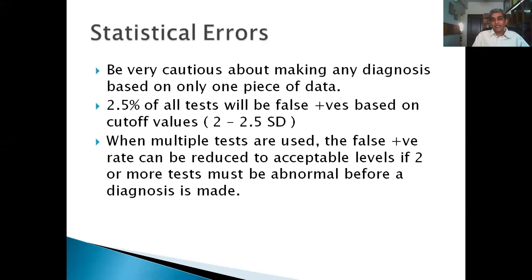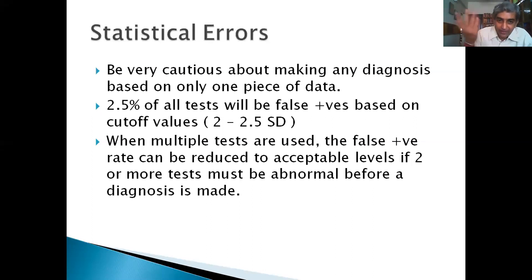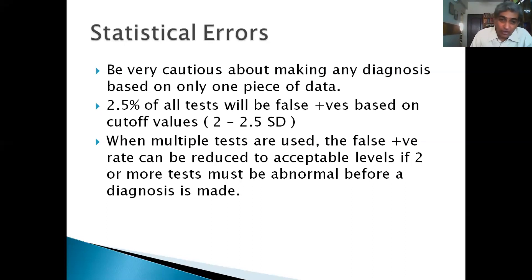Most other lab tests have a lower and upper cut-off, whereas in electrophysiology you may find only one cut-off — for example, conduction velocity has a lower cut-off but no upper cut-off since no conduction velocity can be too good. So you can have either false positives or false negatives depending on these cut-offs. It is worth remembering that 2.5% of all tests will be false positive based on cut-off values, which is usually 2 to 2.5 standard deviations, giving us 97.5% confidence. The false positive rate can be reduced to acceptable levels when we combine two or more tests — stipulating that two or more tests should be abnormal before making a diagnosis makes the process more stringent.